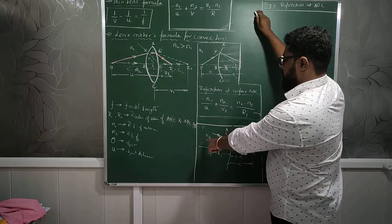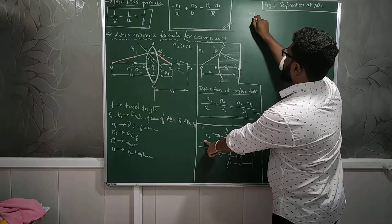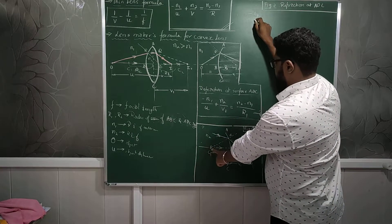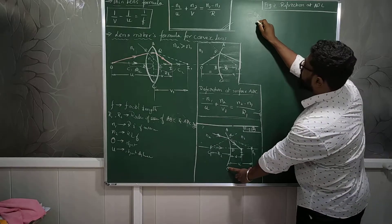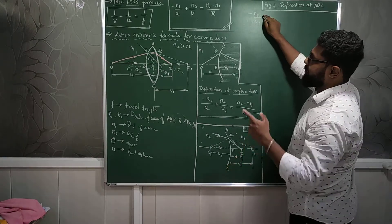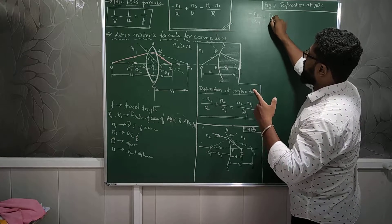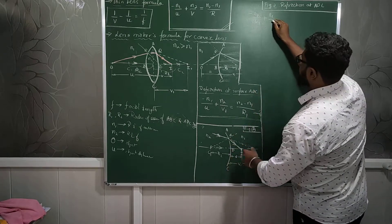First one, N1 will be entering from N2, right? So it will be N2 divided by image distance is V1. Carefully while substituting don't get confused. N1 by V itself.